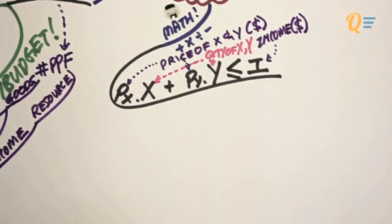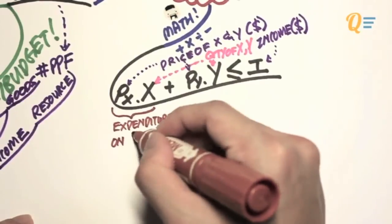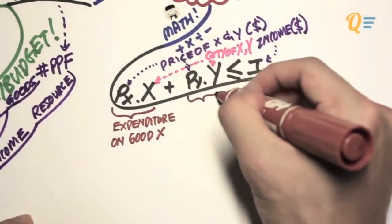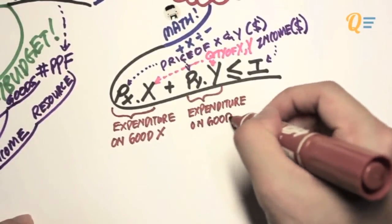Something else pretty obvious is that the price of X multiplied by the quantity of X represents the total expenditure on good X, whereas the price of Y multiplied by Y shows the expenditure on good Y.